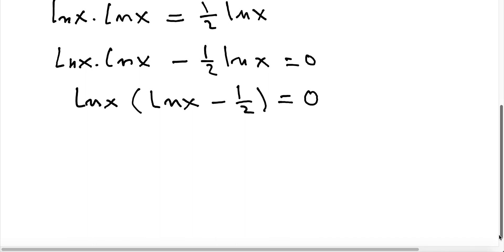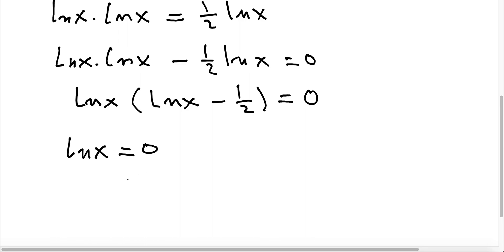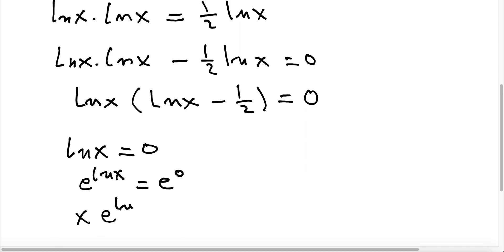According to the zero factor theorem, ln x equals 0. Writing in exponential form, e to the ln x equals e to the 0. Since e to the ln x is x, and e to the 0 is 1, we get x equals 1. So one solution is x equals 1.